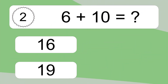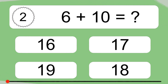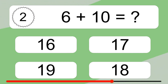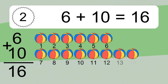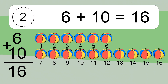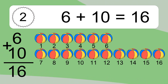6 plus 10 equals what? 6 plus 10 equals 16. Let's count it: 1, 2, 3, 4, 5, 6, 7, 8, 9, 10, 11, 12, 13, 14, 15, 16.